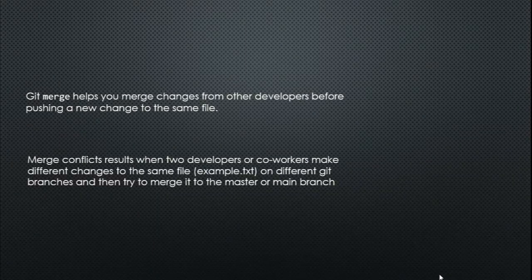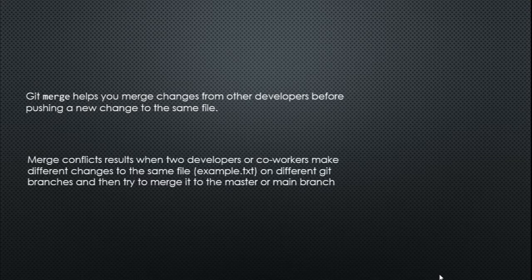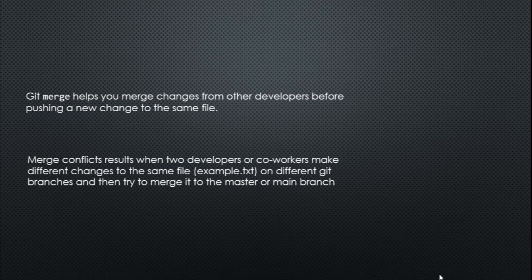Because both example.txt files have been modified by two different people, git doesn't know which to keep and which not to. So for it not to discard valuable information and keep less valuable information, what git is going to do is merge both changes together — even if it's not what it's supposed to be — so long as the changes were made by two different people on the same file. Git will simply fuse the two together and create a bar between them to show which change came from which branch.